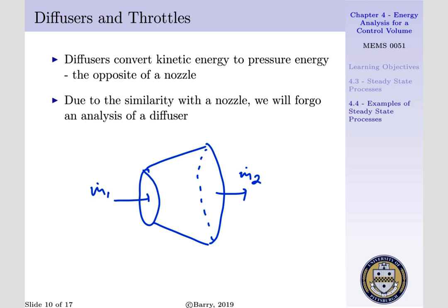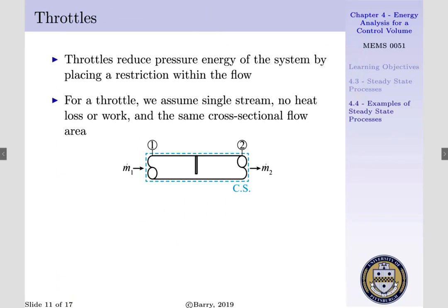Due to the similarity with the nozzle, we will not do an example with a diffuser. We will rather focus our attention to throttles, where throttles reduce pressure energy within our system by placing a restriction within our flow.